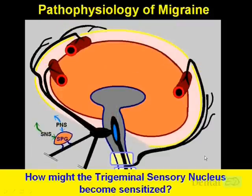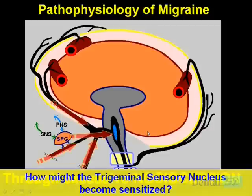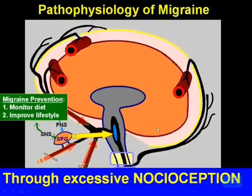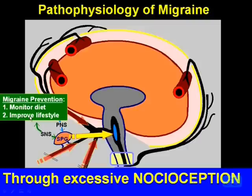The goal is to understand how this trigeminal sensory nucleus becomes sensitized in the first place — to make such abnormal decisions in its modulation. In migraine prevention, the goal is to eliminate or minimize nociception to the trigeminal sensory nucleus. In medicine, the first approach is to find out what your triggers are — what in your diet modifies parasympathetic and sympathetic tone going to the sphenopalatine ganglion and bombards the sensory nucleus. Or improve your lifestyle, change sleep patterns, reduce stress. That's difficult for patients, so they usually turn to medication that modifies their neurotransmitters.